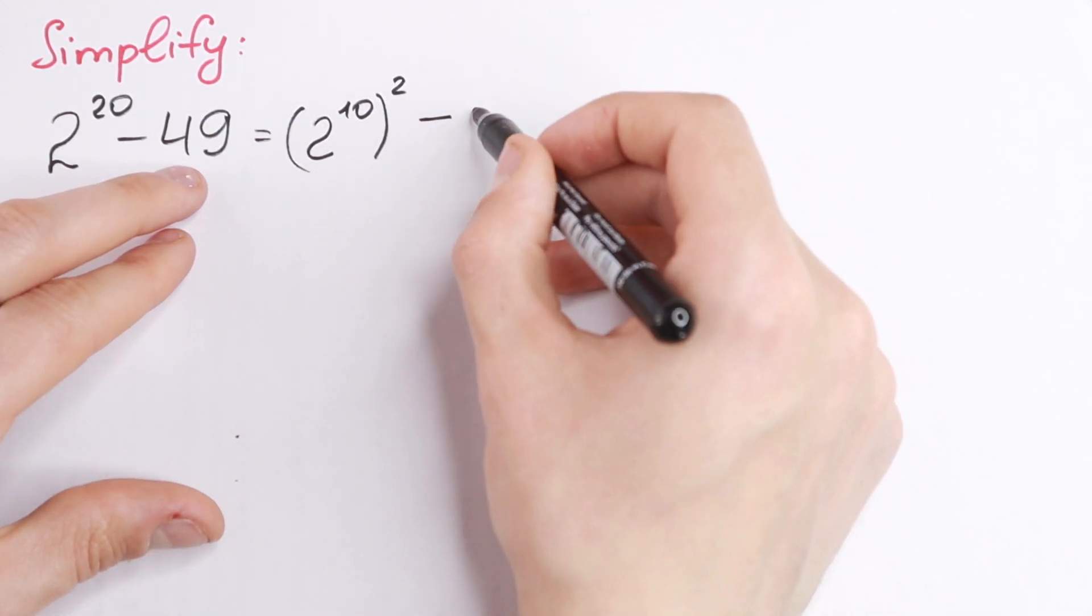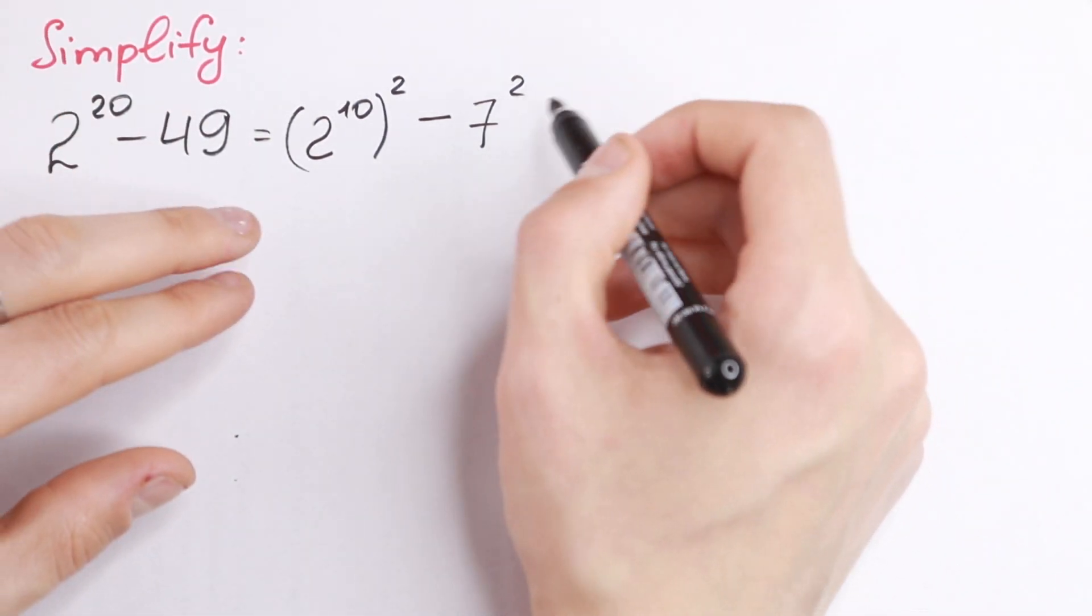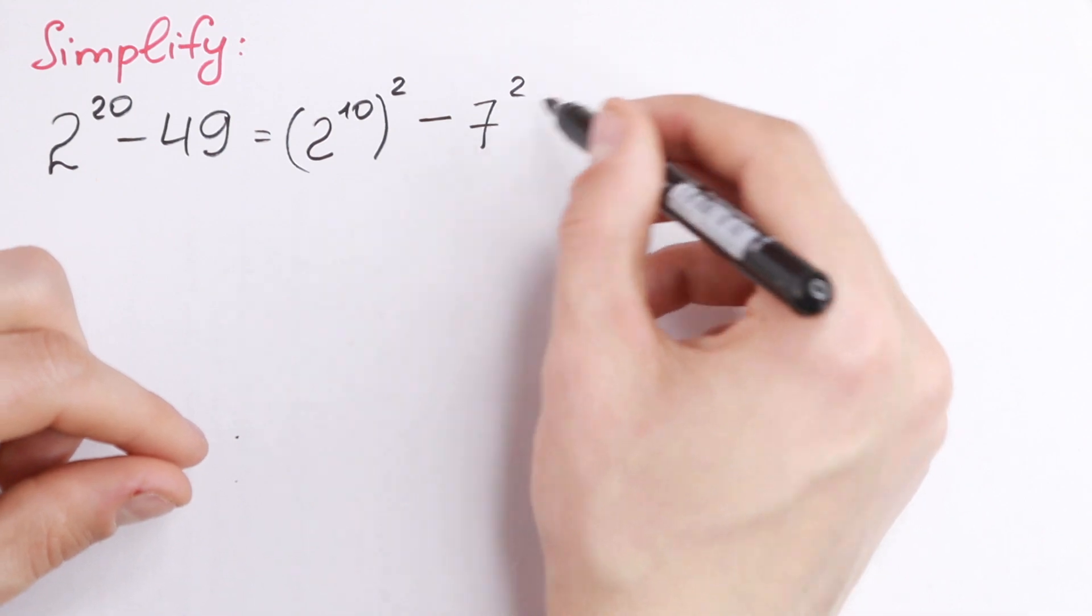And minus 49 we can write as 7 squared. This is a perfect square, so it's really good. 48 would not be good for us, but 49 we write as 7 squared.